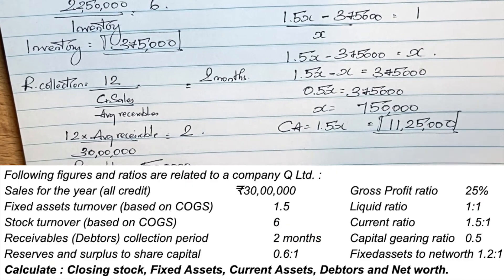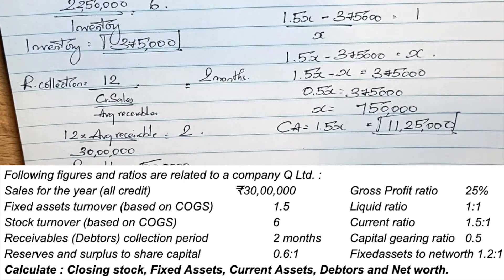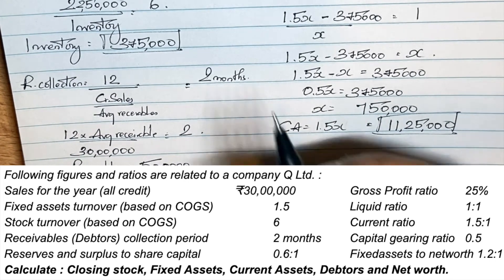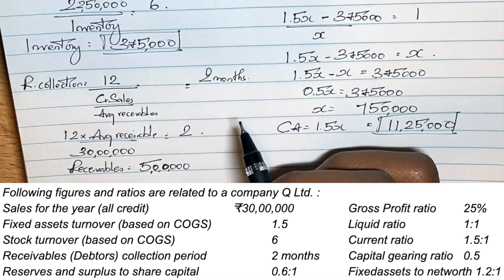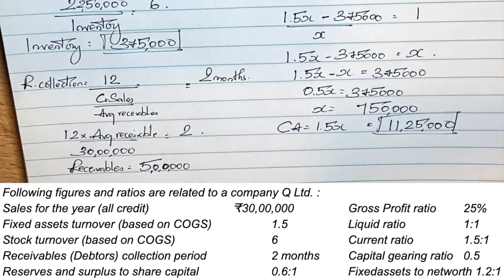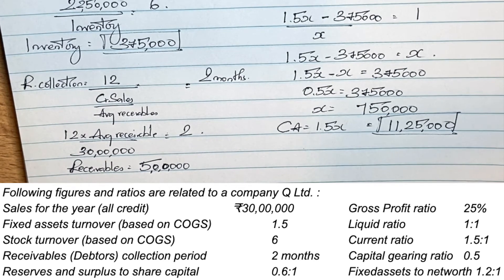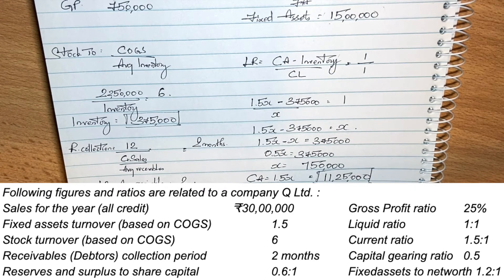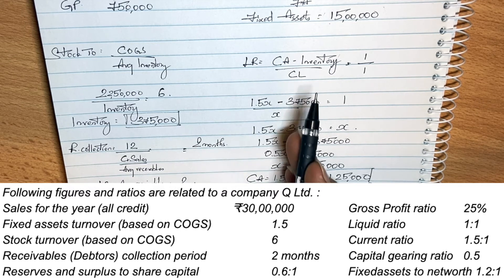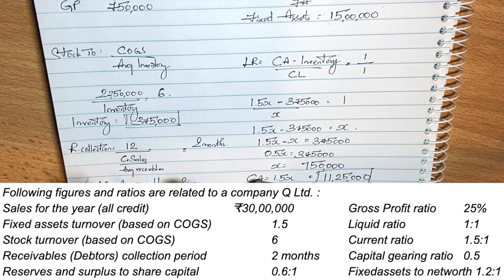Now for net worth — the fixed assets to net worth ratio is 1.2 to 1. The formula is fixed assets divided by net worth. Fixed assets is 15,00,000 divided by net worth equals 1.2, so net worth equals 15,00,000 divided by 1.2, giving net worth equals 12,50,000.